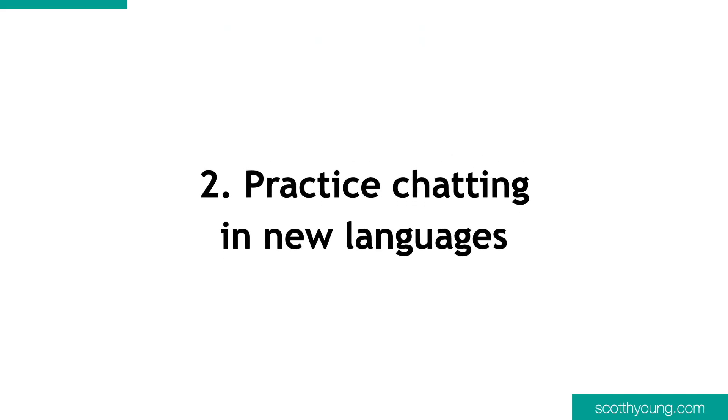Number two: practice chatting in new languages. The next most common way people used AIs to learn better was as a language tutor. This seems like a task AIs are well equipped for. Whatever their other flaws, they can produce grammatically correct text. Many people set up their conversations with ChatGPT so that the AI could go back and forth between the language they're learning and English explanations when they got confused. Likely those explanations are going to be imperfect, but human tutors often give incorrect accounts of the grammar and vocabulary that they use proficiently.